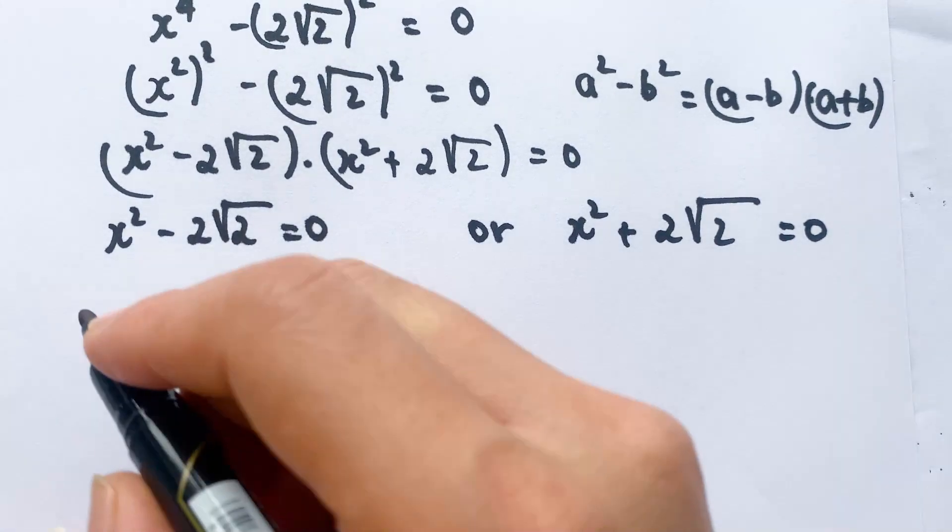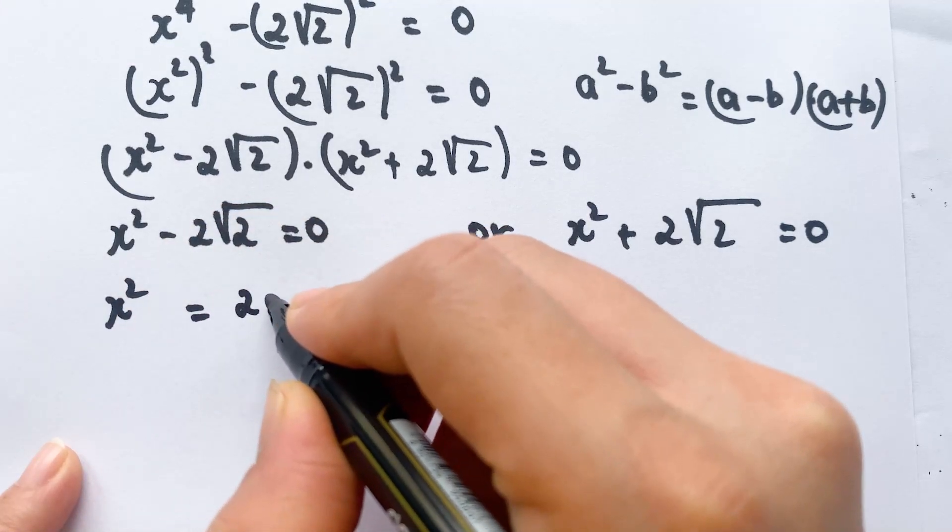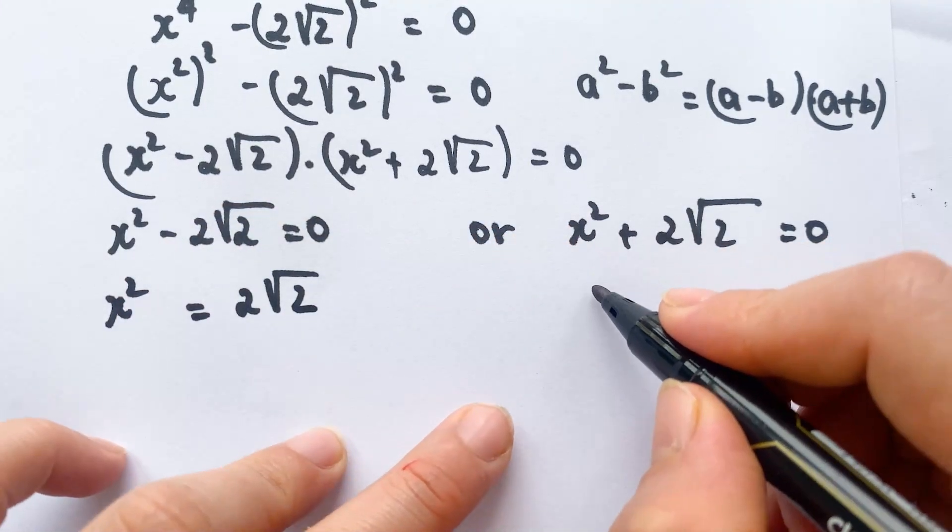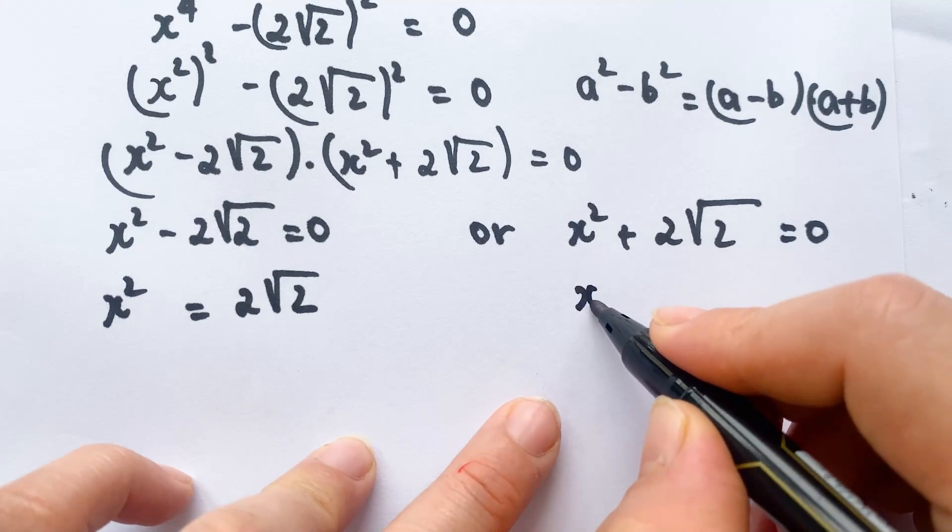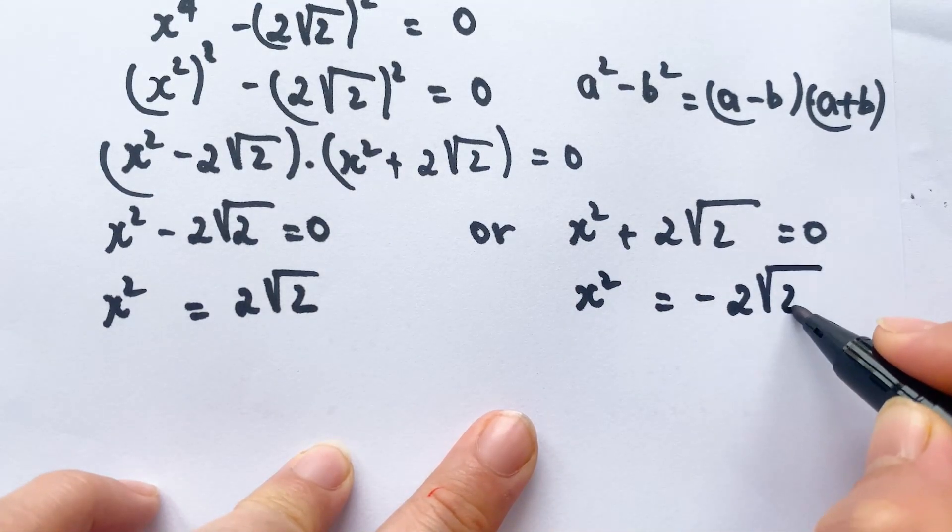For case 1, we can say x^2 = 2√2. And for case 2, x^2 = -2√2.